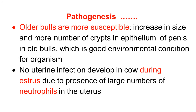No uterine infection develops in the cow during estrus — remember this important point. During estrus there is no development of infection in the cow, because there is a large number of neutrophils present in the uterus. These neutrophils do not allow the establishment of infection during estrus.